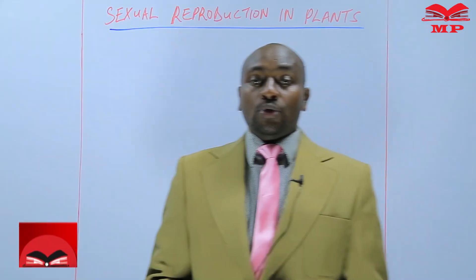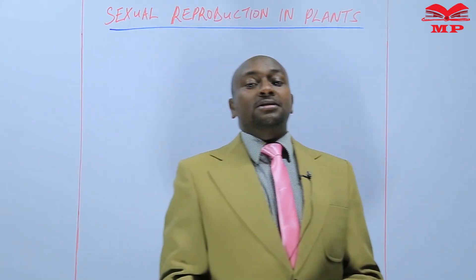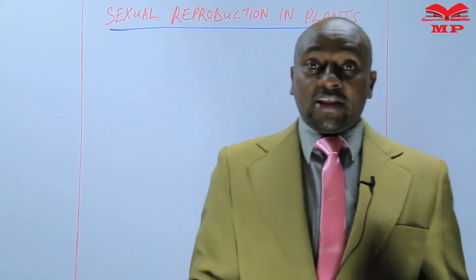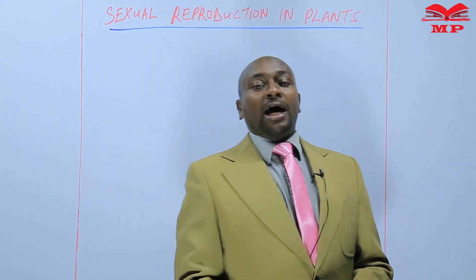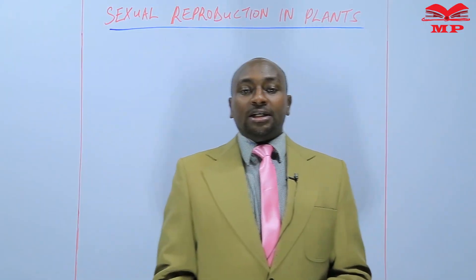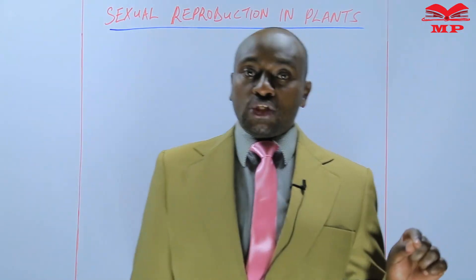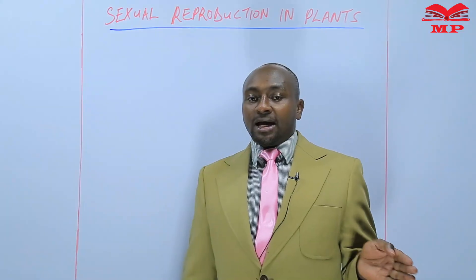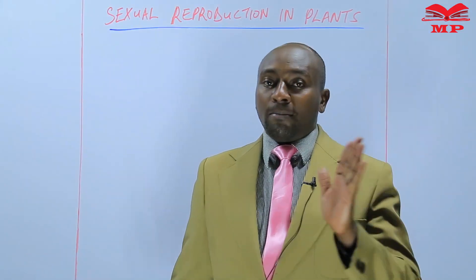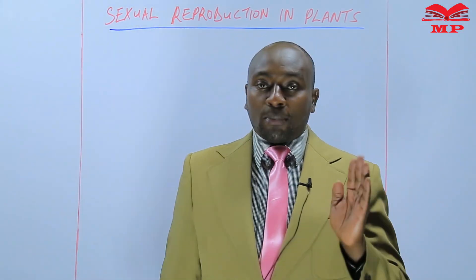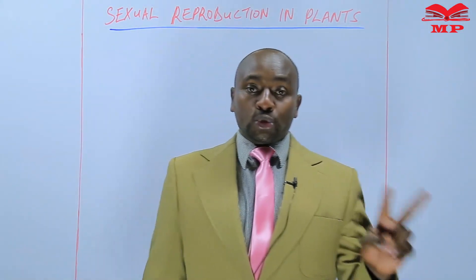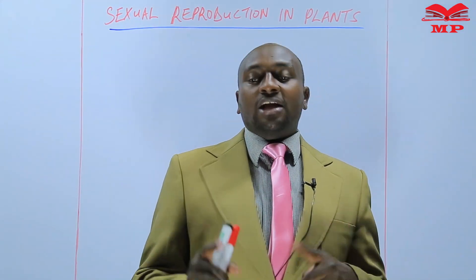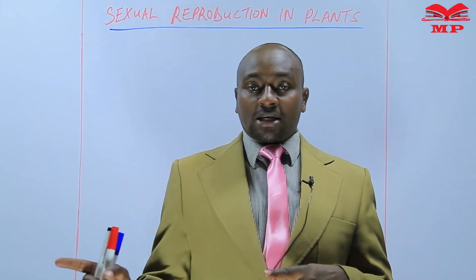Last lesson we discussed the types of gynoecium, and we saw that we have two main types of gynoecium: monocarpous and polycarpous. Polycarpous is further divided into two, and that is apocarpous and syncarpous.